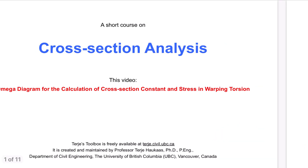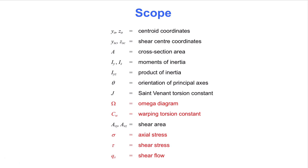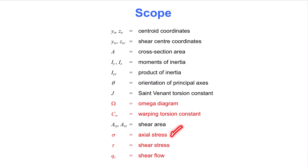There are a number of quantities that may be of interest in a cross-section analysis, many of them shown on this slide, but the scope in this video is more limited. The objective here is to establish the Omega Diagram for warping torsion. Once that diagram is determined, we wish to determine the cross-section constant for warping torsion, Cw. The distribution of the axial stress also follows from the Omega Diagram. Finally, we wish to determine the shear flow and shear stress, which are derived from change in the axial stress, as we do in cross-section analysis for Euler-Bernoulli beam theory.